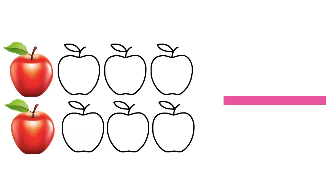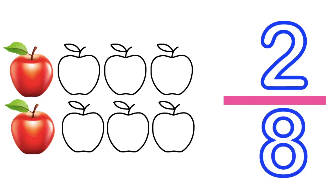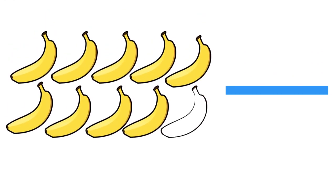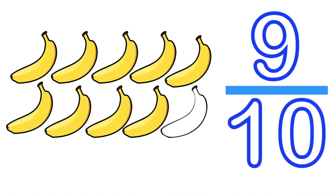How about if we have this? What is the fraction of the red apple? Let's have the numerator first — what is our numerator here? Very good, it's two, since we have two red apples. How about the denominator? Good job! It's eight, since we have eight apples in total. How about if we have this one? What is the fraction of the yellow banana? The numerator is nine. How about the denominator? Fantastic! It's ten, since we have ten bananas in total. So the fraction is nine-tenths.